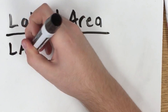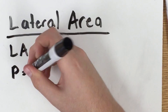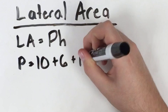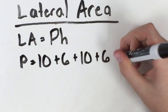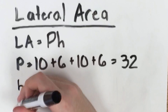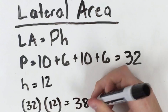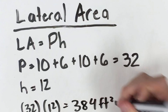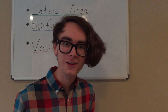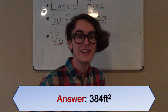Does anybody know what the lateral area is? Well, if my calculations are correct, the answer must be 384 feet squared. Exactly.